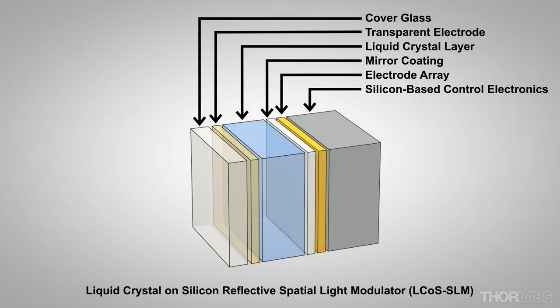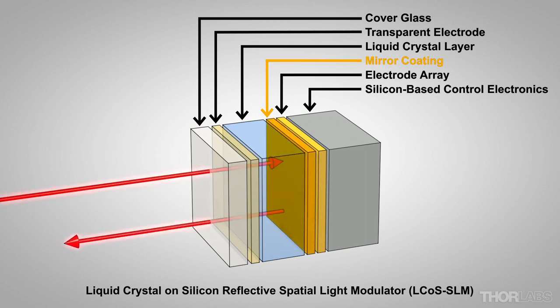The liquid crystal on silicon spatial light modulator is closely related to liquid crystal displays. Light is transmitted through a protective glass cover, transparent electrode layer, and into a liquid crystal layer. After reflecting from a mirror coating behind the liquid crystal layer, the light passes back through the three layers and exits the SLM.